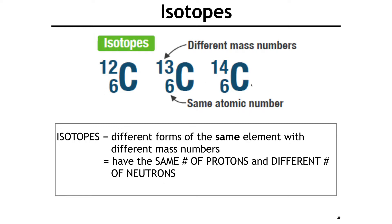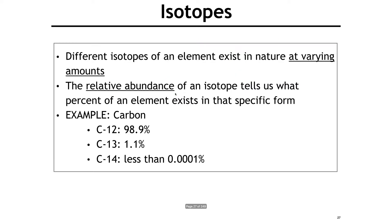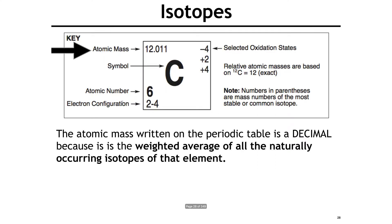Now, isotopes. Isotopes are different forms of the same element — for example, different forms of carbon. The atomic number, or number of protons, must stay the same, because if we change the number of protons we're changing the element. What changes is the number of neutrons, and therefore the mass number. Different isotopes exist in nature at varying amounts — for example, there's much more carbon-12 than carbon-14 or carbon-13. This is called relative abundance.